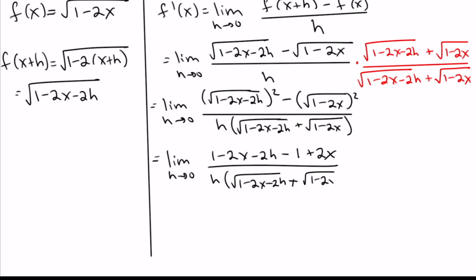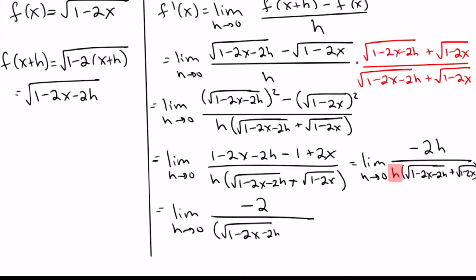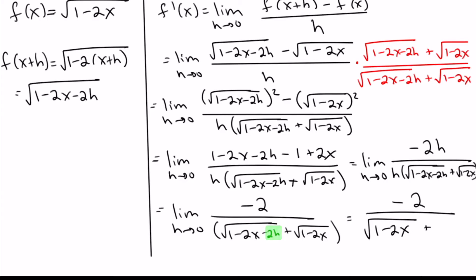Looking at the top now, we can do some canceling: the negative 2x and positive 2x cancel, and the 1 and negative 1 cancel, leaving just negative 2h on top. Now we can see those h's cancel each other out. Once we do that, we're left with negative 2 on top. On the bottom we've got the square root of (1 minus 2x minus 2h) and the other square root. Now we can plug in h equals 0. The bottom becomes root(1 minus 2x) plus another root(1 minus 2x), giving us negative 2 over 2 times root(1 minus 2x), which simplifies to negative 1 over root(1 minus 2x).